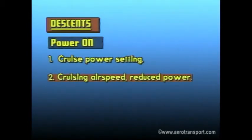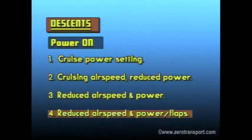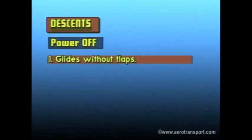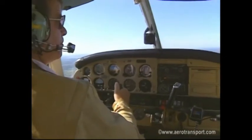And descents at reduced airspeed and reduced power settings with flaps extended to maintain the angle of descent. Power-off descents can be divided into glides without flaps and glides with flaps extended. You can use power-off or power-on descents to meet the requirements of just about any situation. However, power-on descents allow you more flexibility and make it easier to correct any errors in judgment.